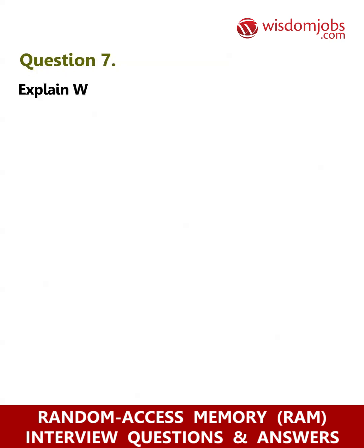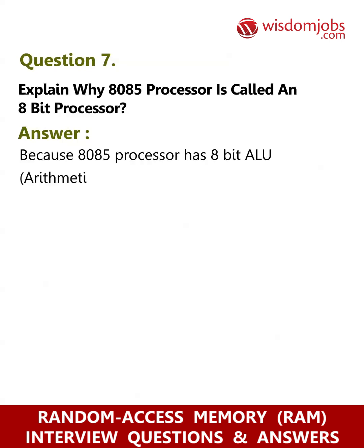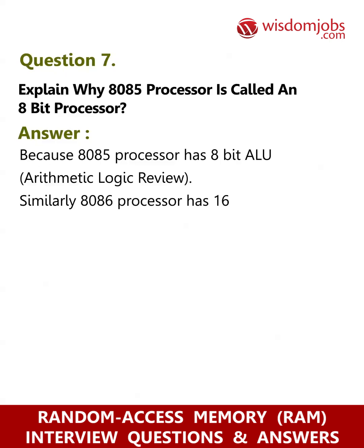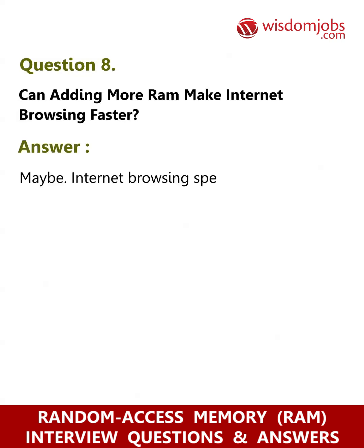Question 7: Explain why the 8085 processor is called an 8-bit processor. Answer: Because the 8085 processor has an 8-bit ALU (Arithmetic Logic Unit). Similarly, the 8086 processor has a 16-bit ALU.